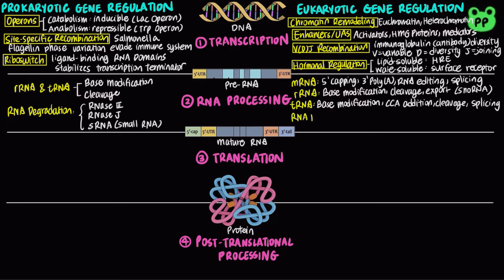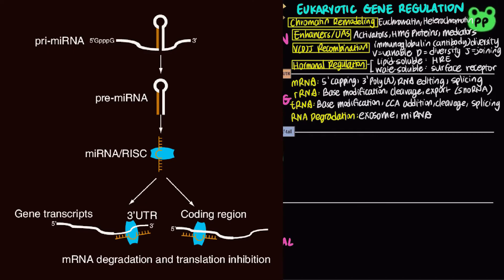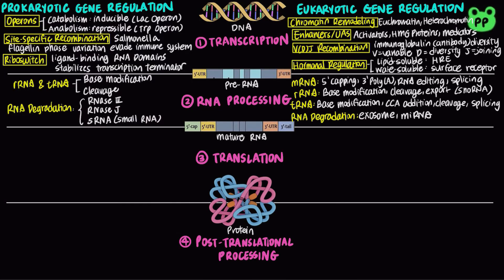Eukaryotic RNA can be degraded by a 3' to 5' exoribonuclease known as the exosome, as well as miRNA, which are small single-stranded non-coding RNA molecules that bind and degrade complementary mRNA. This process is known as RNA interference.